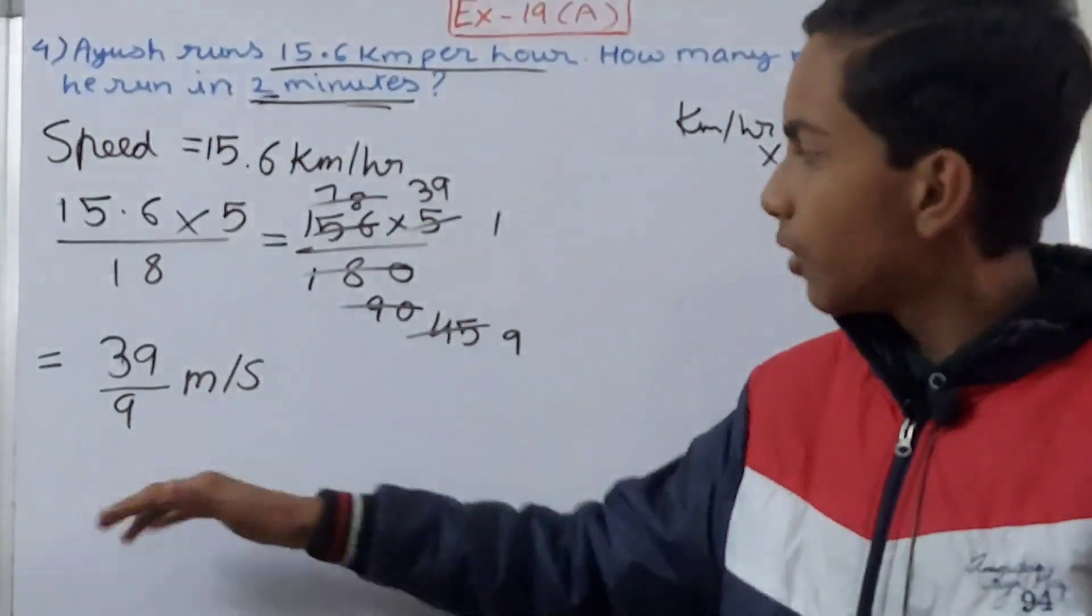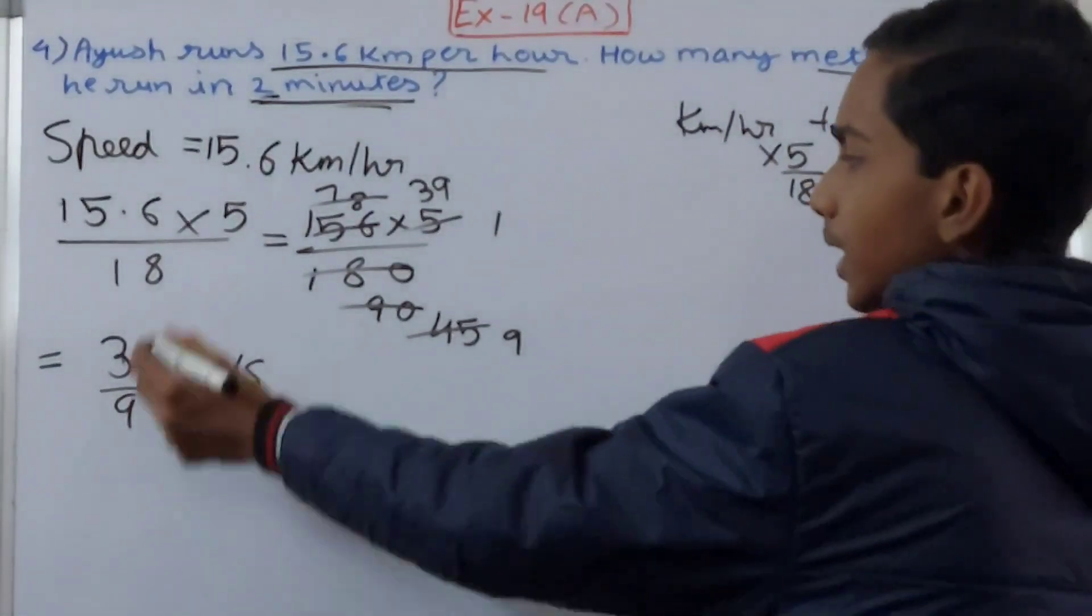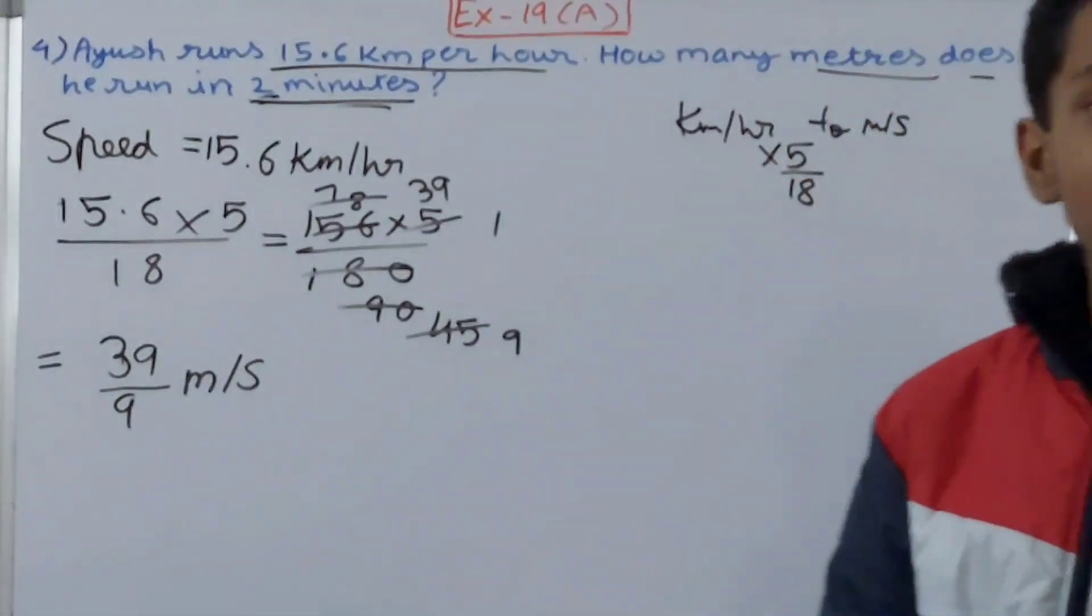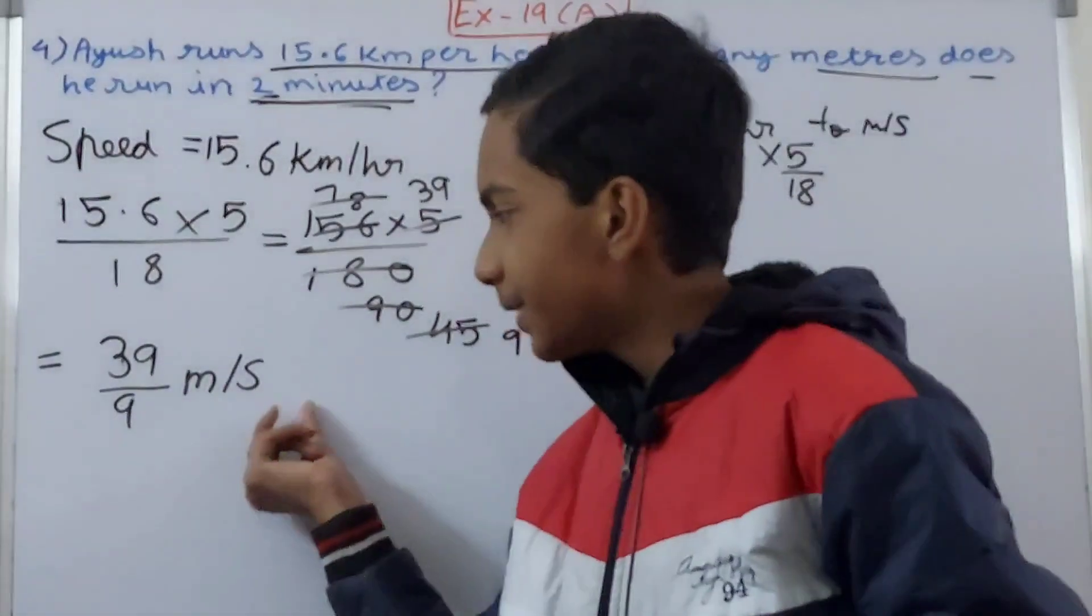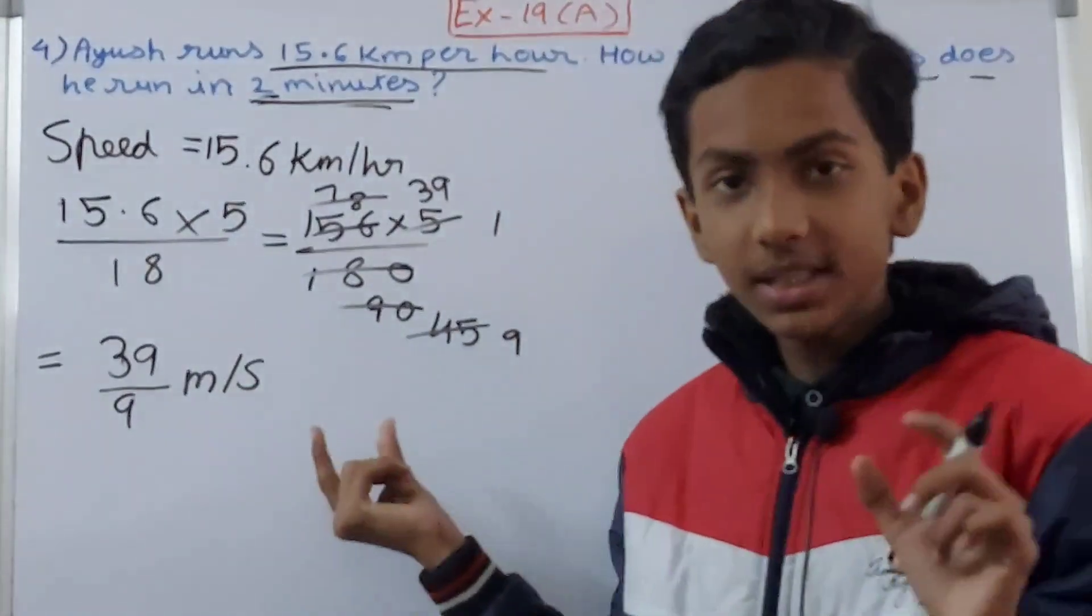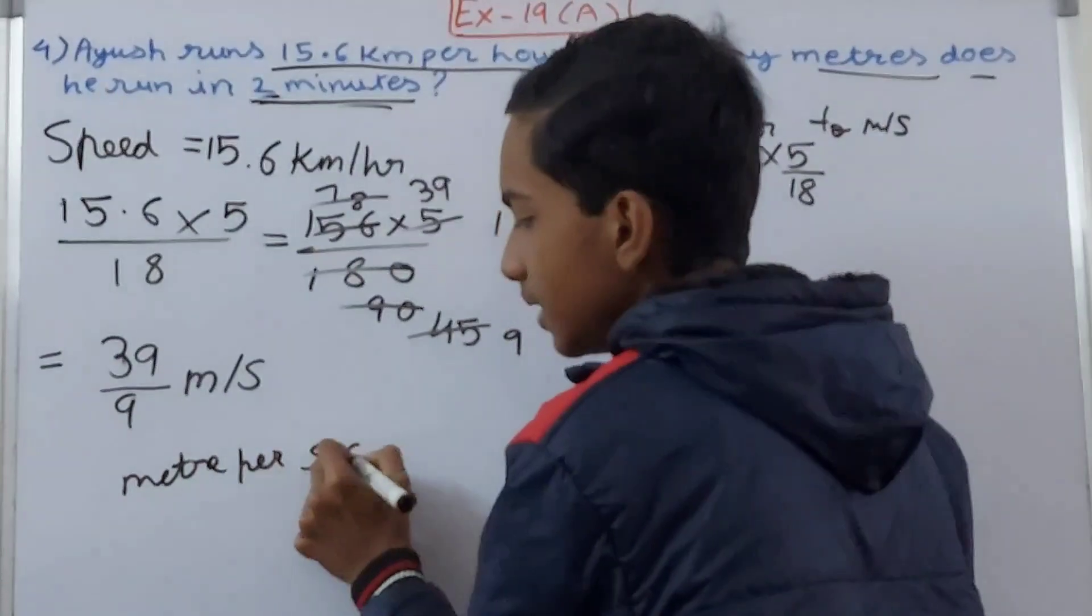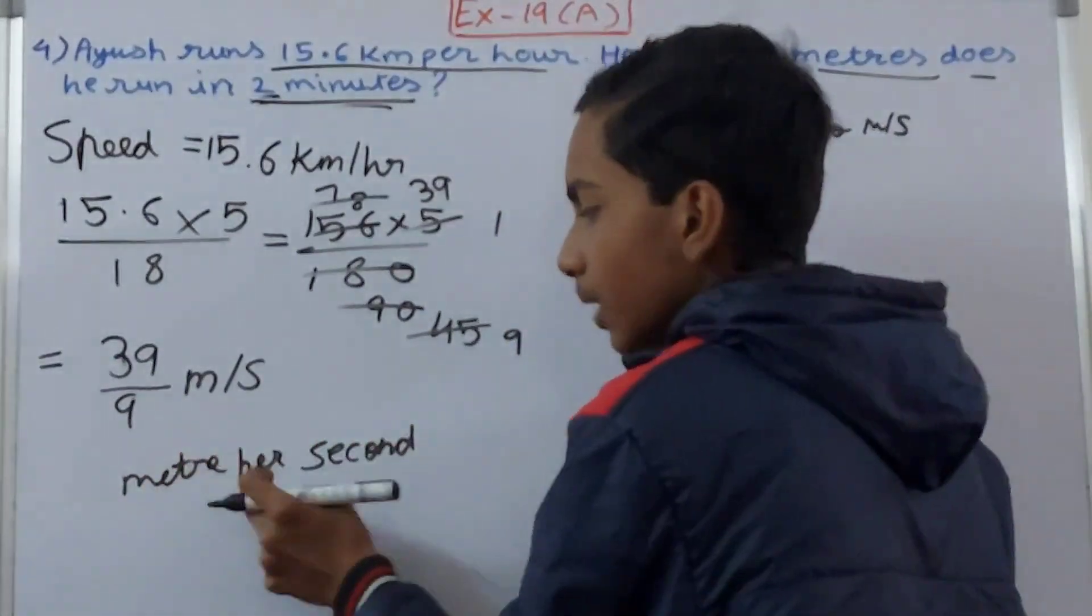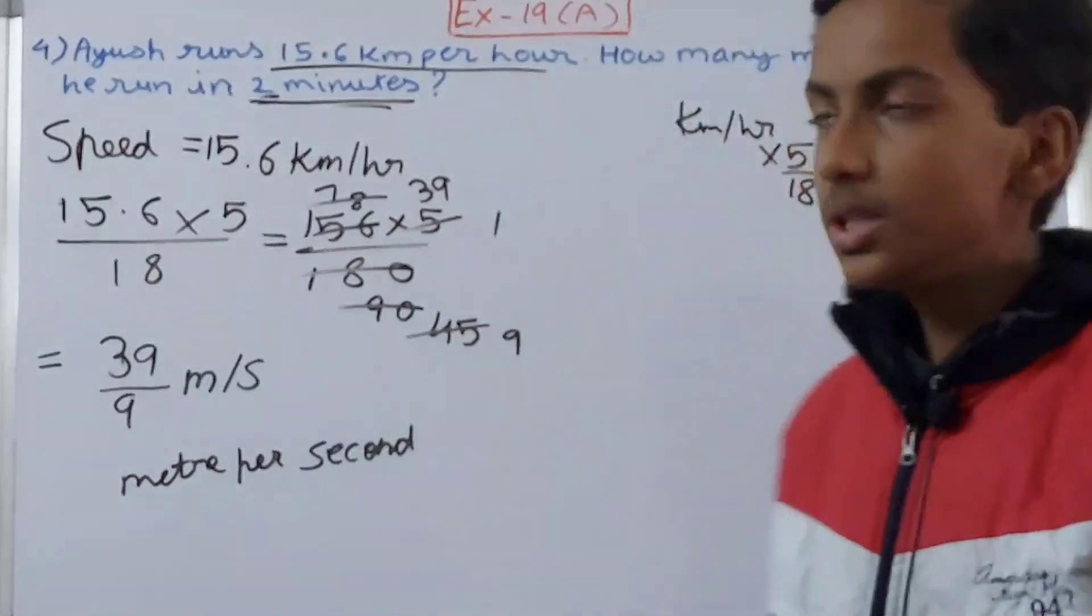Now you see that 39 by 9 is the speed for 1 second. How? See, it is meter per second. Per second means one. Per means one in one second. So it will travel 39 by 9 meters in one second. And you see it is asking us the time in two minutes.